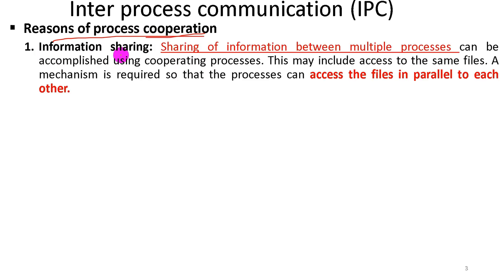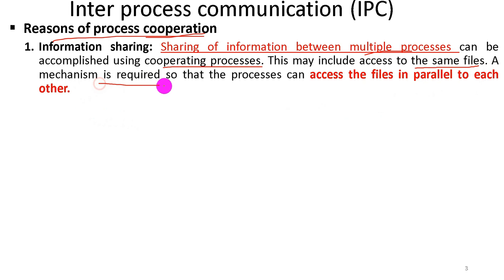The first reason for process cooperation is information sharing. Information sharing means multiple processes share the same information. This may include access to the same file, so a mechanism is required so that processes can access the file in parallel to each other.